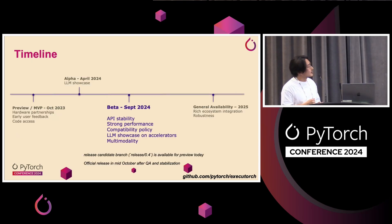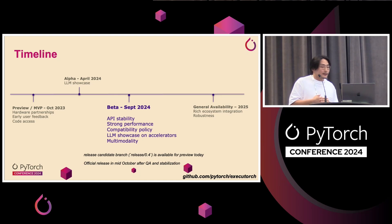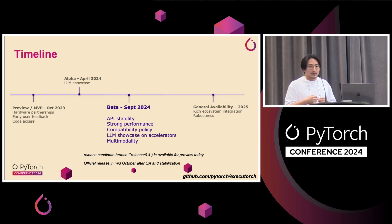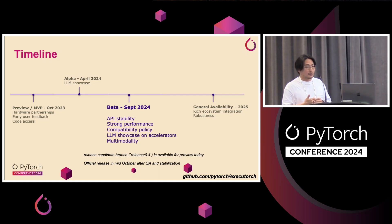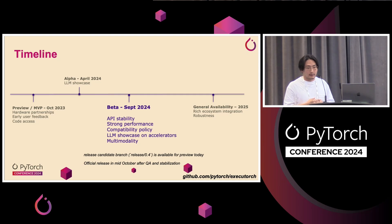We announced the MVP preview release in late 2023. Earlier this year, we showcased an LLM use case. And today, we are announcing beta status of the software — meaning we are focusing on API stability, performance, and robustness. We have a release candidate branch visible as of today, with the official release coming in mid-October. Next year, we are planning a general availability release.